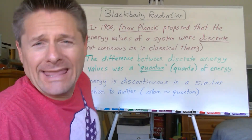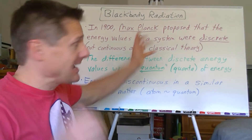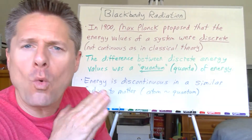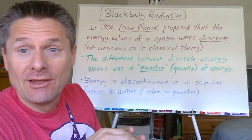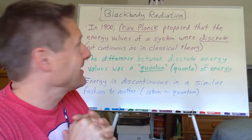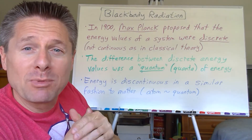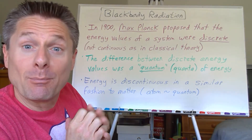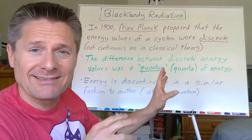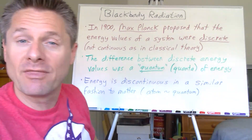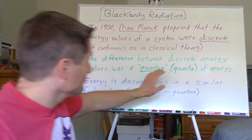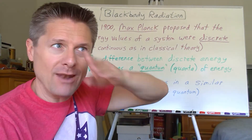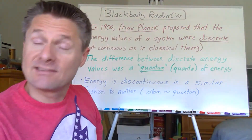In 1900, Max Planck was the first to propose the quanta or quantum concept, making him arguably the grandfather of quantum mechanics — though Einstein and Bohr later took the ideas further. He was trying to explain the UV catastrophe: why did classical theory fail, and how do you get the curve to rise and then come back down again?